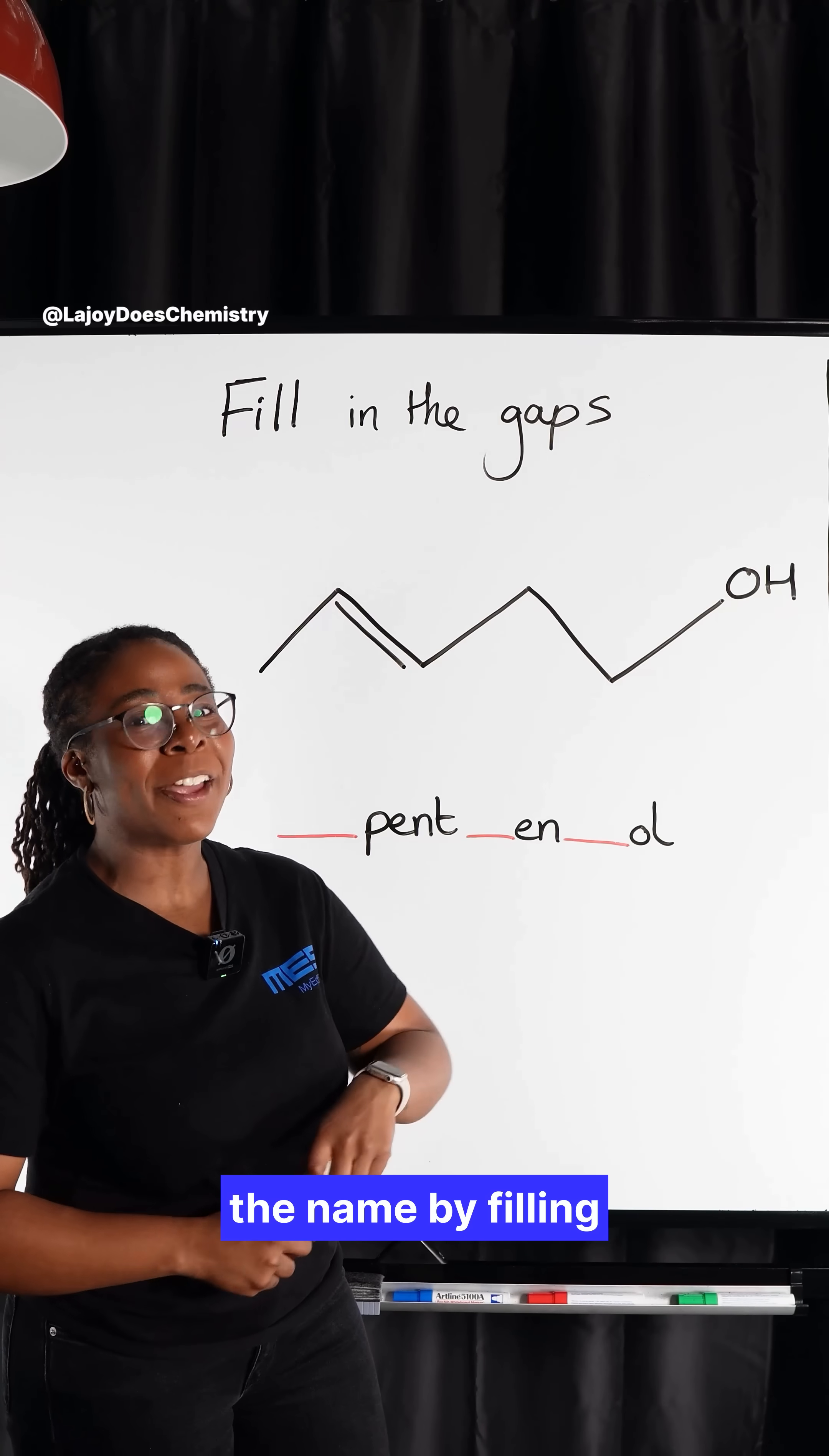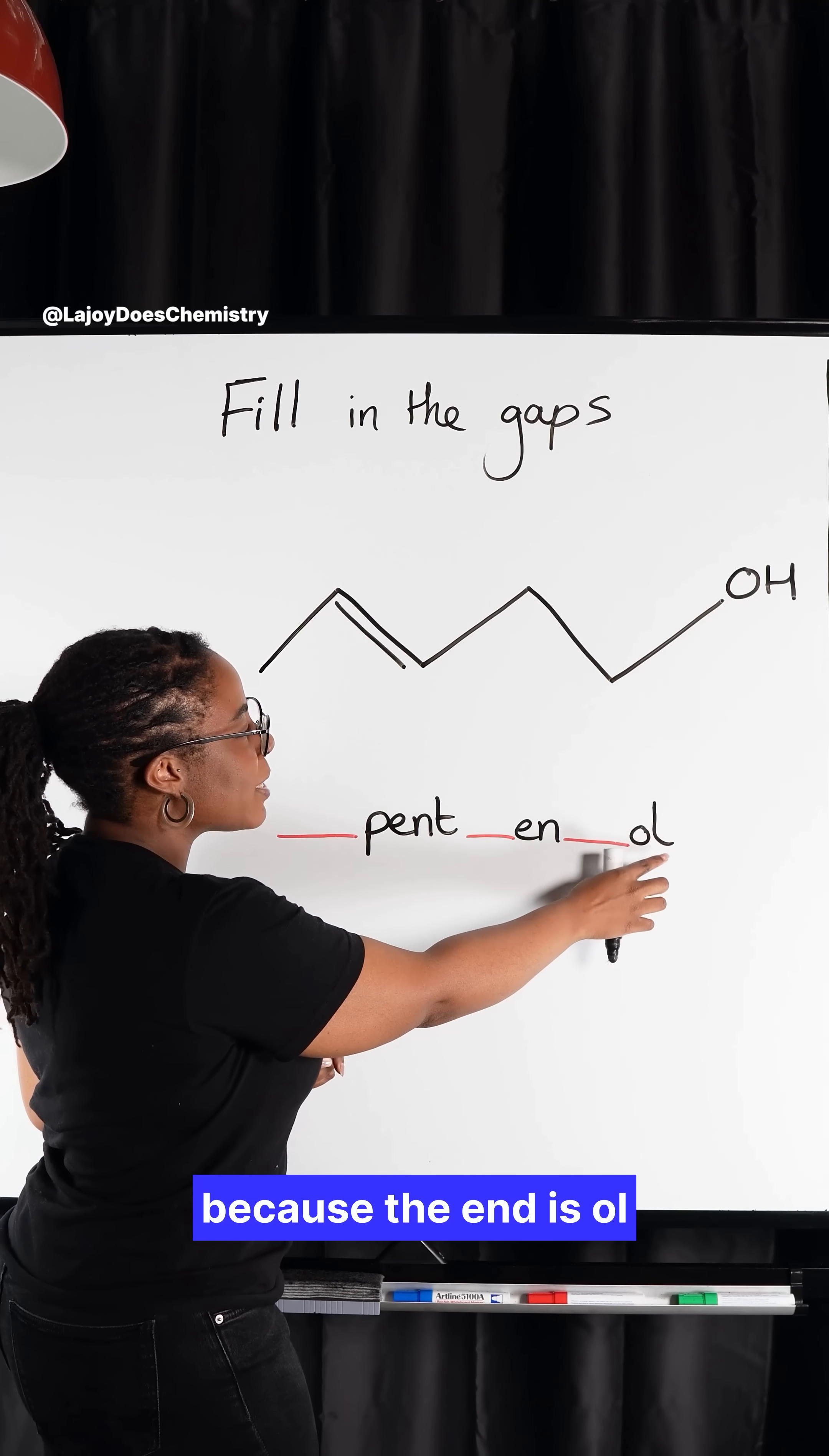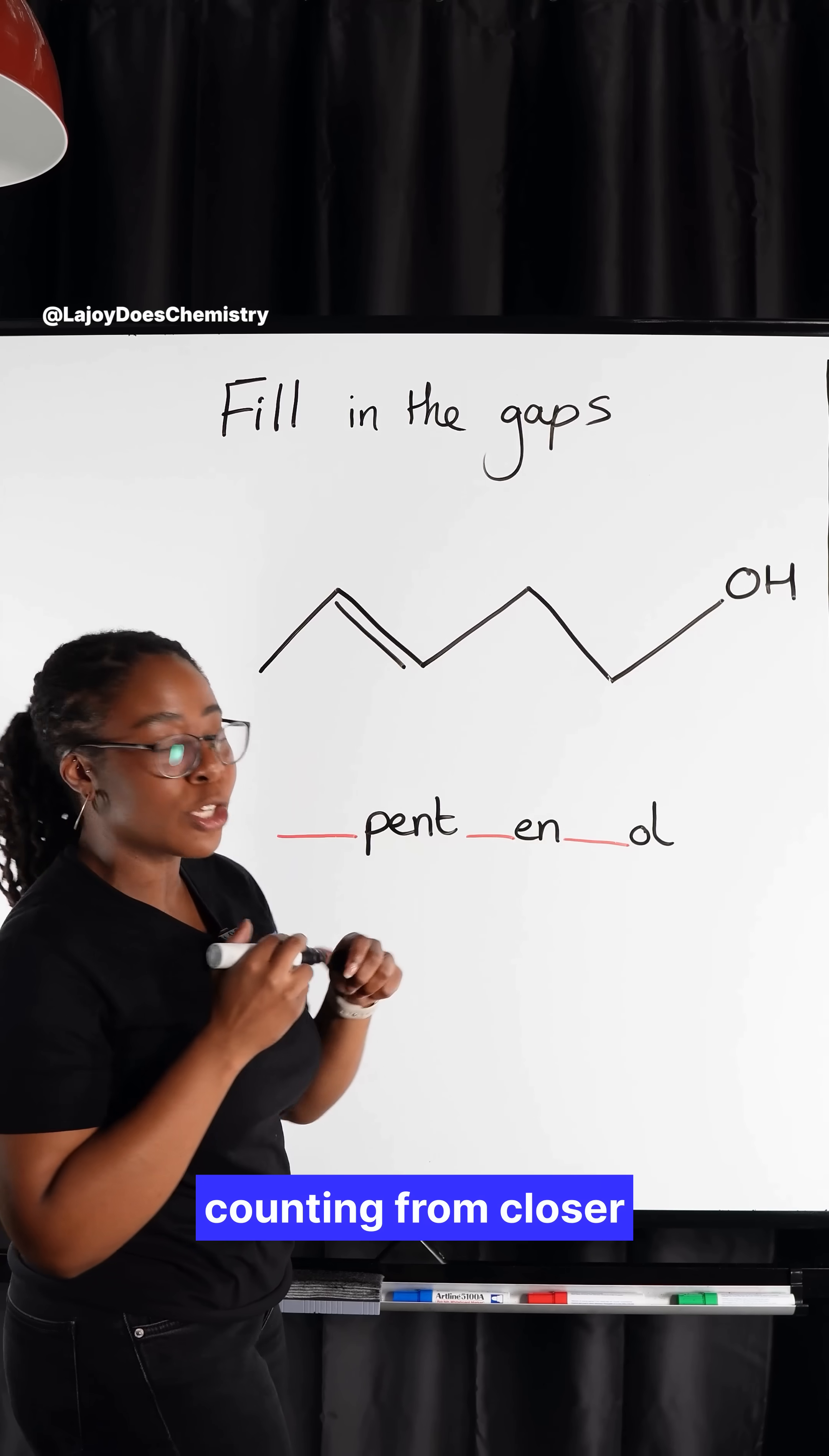Can you complete the name by filling in the gaps? Let's start with, I'm actually going to work backwards here. Because the end is ol, that means that this OH has got the higher priority and we're going to start counting from closer to that group.